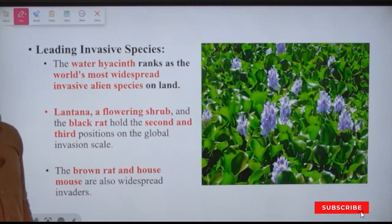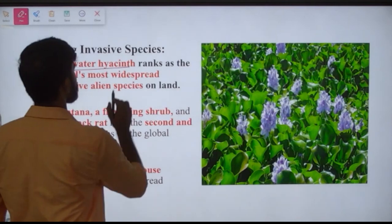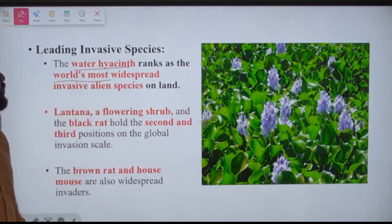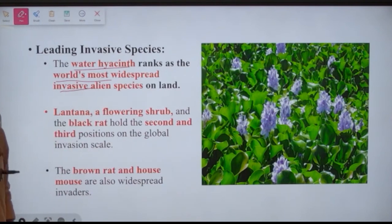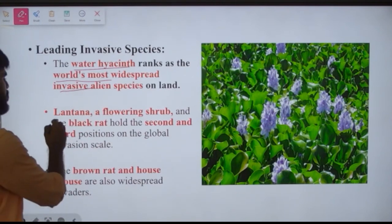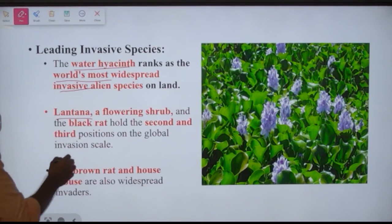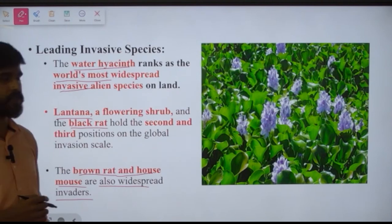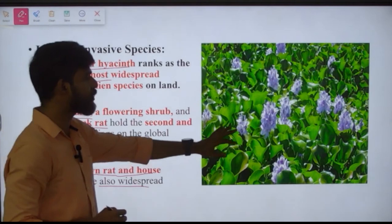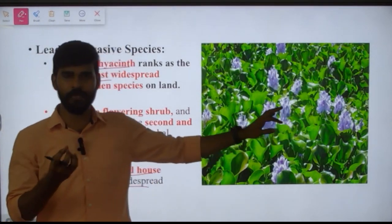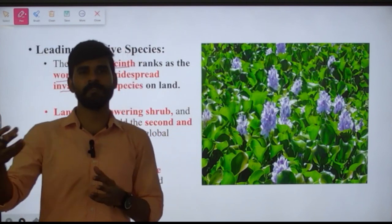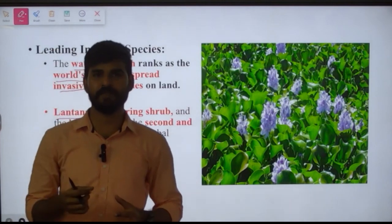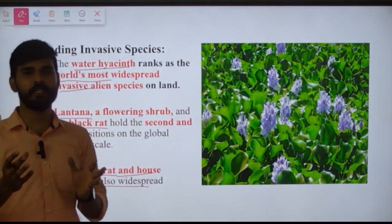The leading invasive species include: water hyacinth, which ranks as the world's most widespread invasive alien plant; lantana, a flowering shrub; and the black rat. Brown rats and house mice are also widespread invaders. Water hyacinth grows in ponds and consumes all available nutrients, depleting them for native species and disrupting that ecosystem.